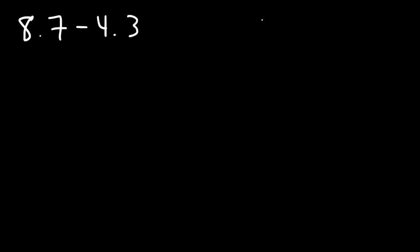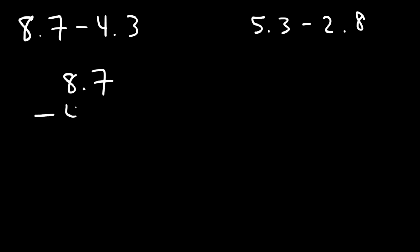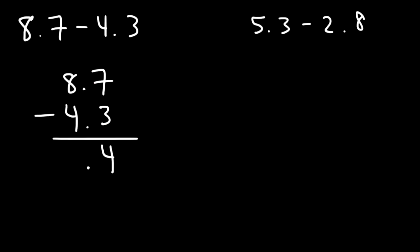Let's try two more problems: 8.7 minus 4.3 and 5.3 minus 2.8. Go ahead and work on those. For the first one, in the first column we have 7 minus 3, which is 4. Write the decimal point, and in the second column we have 8 minus 4, so the answer is 4.4. As you can see, it's not that bad.